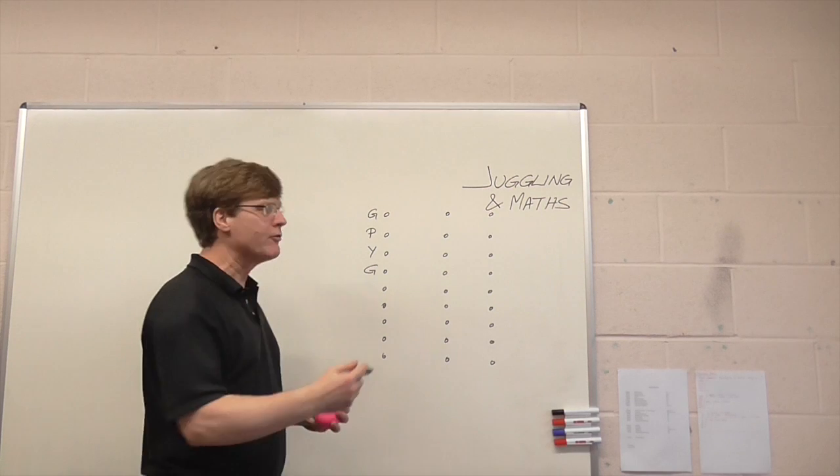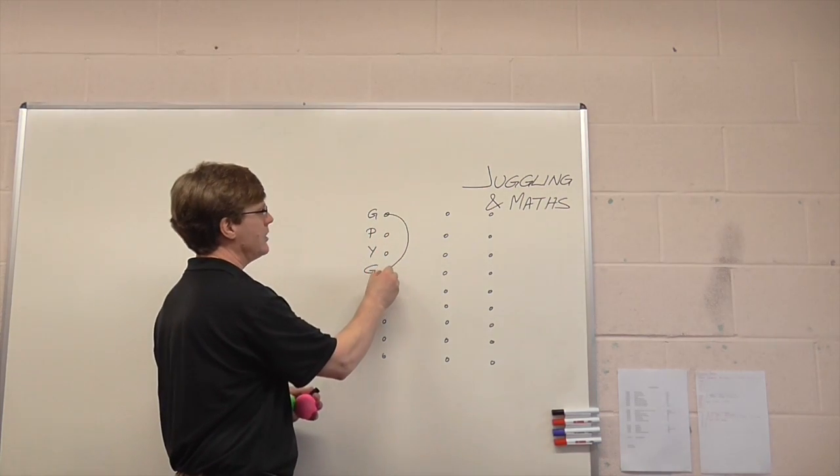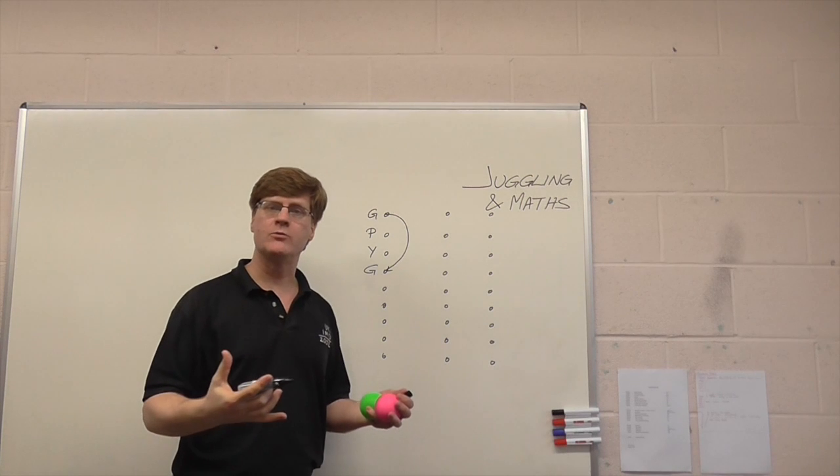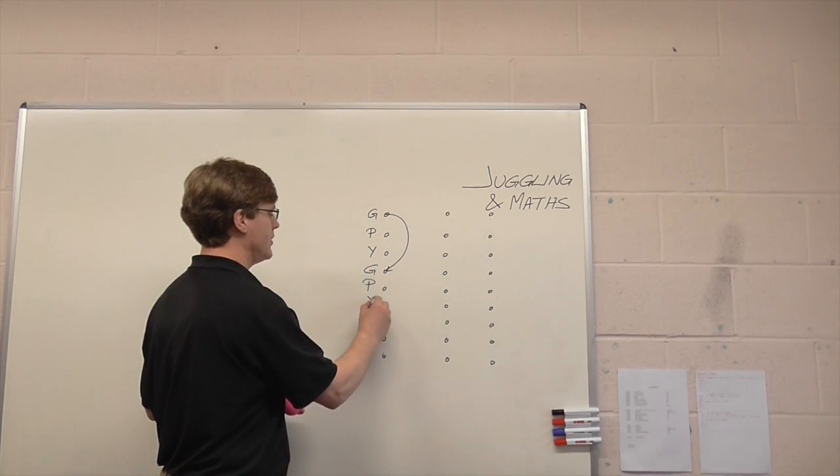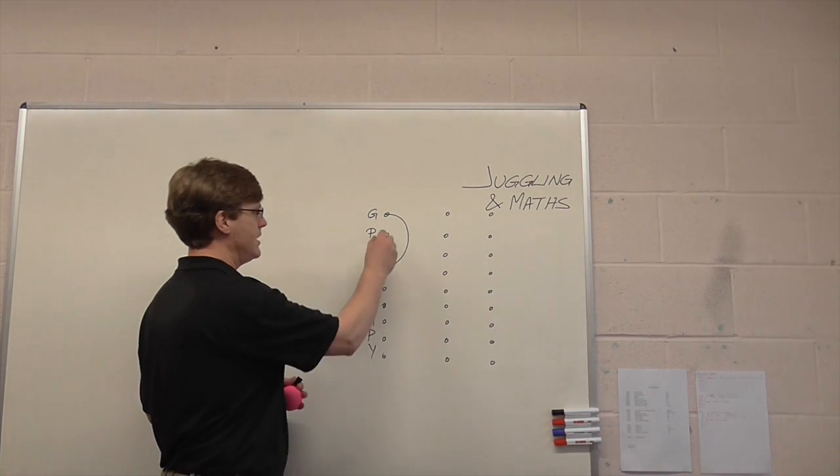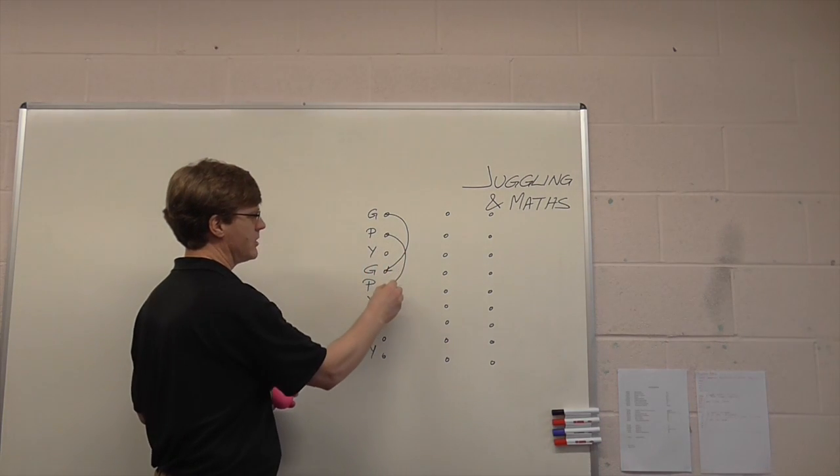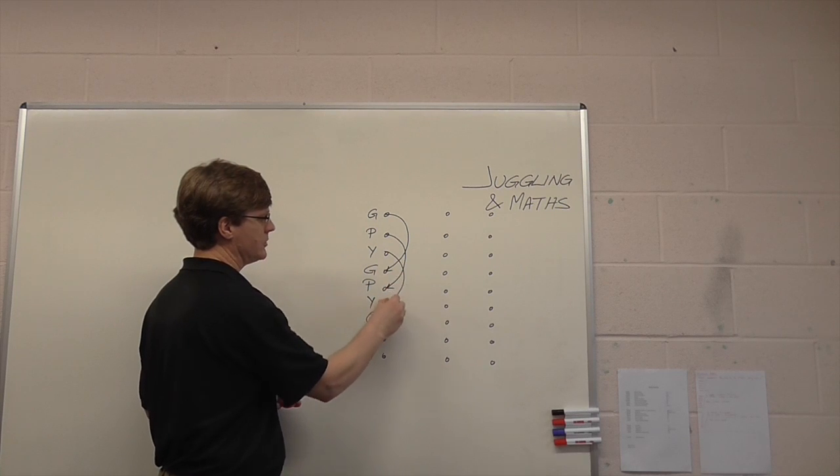So I can draw an arrow connecting that throw to here to show that that's where it comes down. Of course I carry on like this. I do the pink and then the yellow, then the green, then the pink, then the yellow, and I can join them on. The pink comes to here, the yellow comes to here.